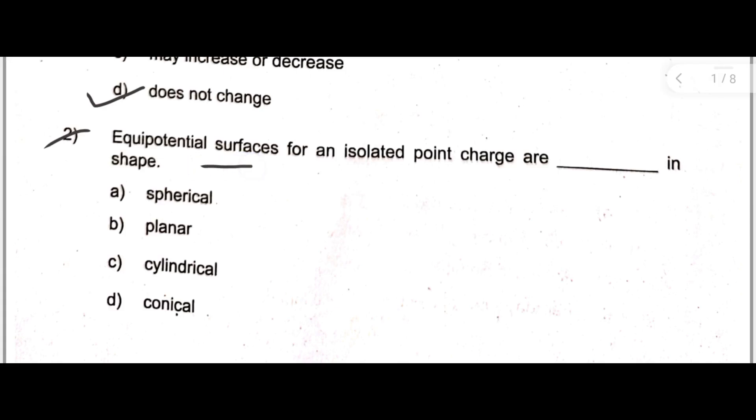Next question is: Equipotential surfaces for an isolated point charge are dash in shape. Here the correct answer is spherical in shape.